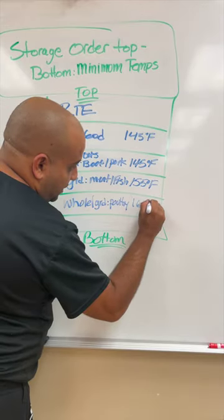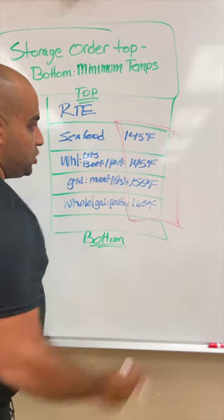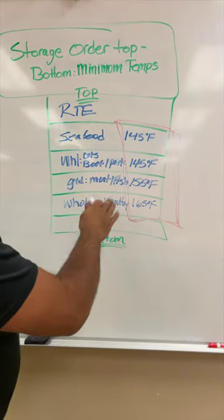Whole and ground poultry, 165 degrees Fahrenheit. Make sure you pay attention to this one because it's huge and it's a big one when it comes to your operation. Make sure you're properly shelving.